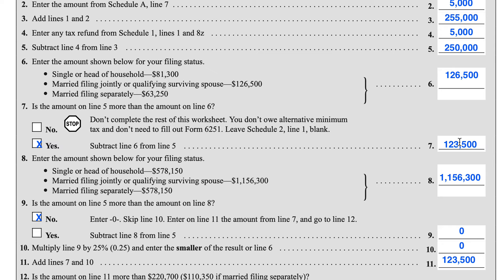We subtracted that and arrive at $123,500. In Line 8, we're going to enter $1,156,300. Now we go back to Line 5 — is the Line 5 amount greater than the Line 8 amount? In this case, no, it's not. We skip Lines 9 and 10, as you can see.